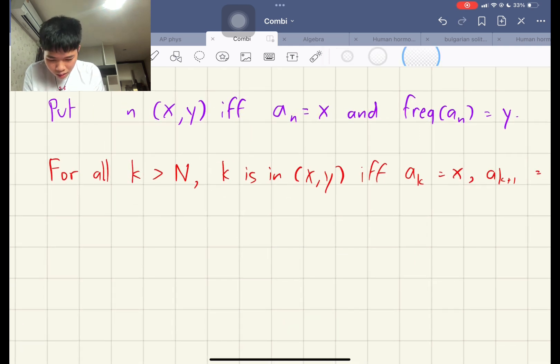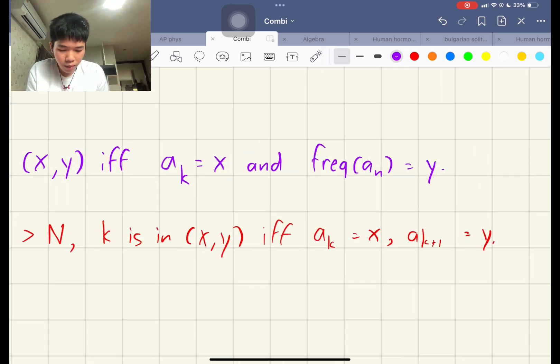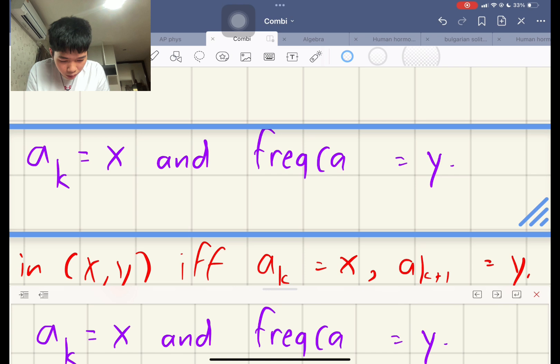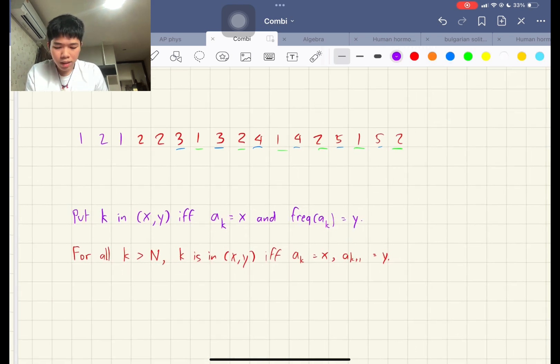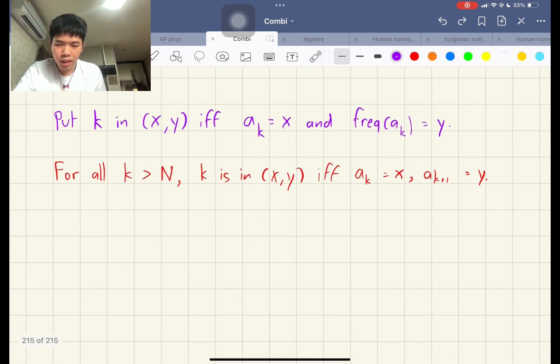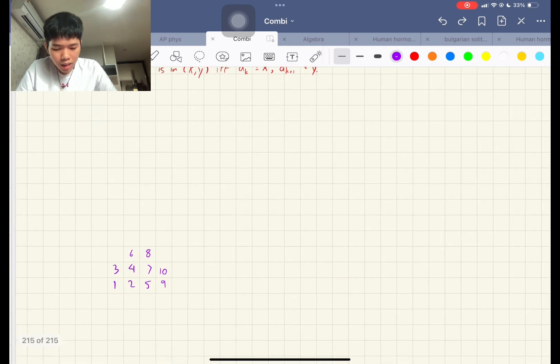We put the number k in the cell (x,y), if and only if a_k is equal to x, and the frequency of a_k is equal to y. So like, if k is larger than this number, larger than n, you get that a_k is equal to x, and a_{k+1} is equal to y. Now, to keep the video at a moderate pace and not too slow, I have skipped the construction process, and here is what it looks like.